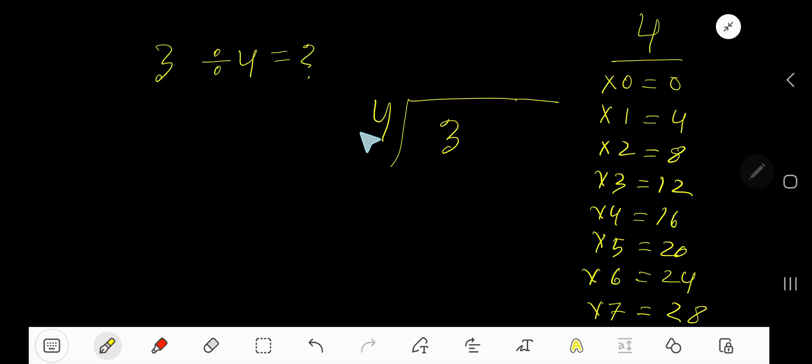3 divided by 4. Here 4 is the divisor, so we need the multiplication table of 4.